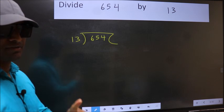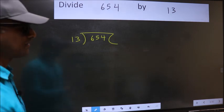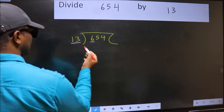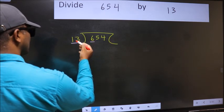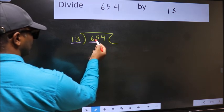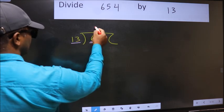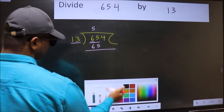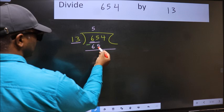This is your step 1. Here we have 6 and here 13. 6 is smaller than 13, so we should take two numbers: 65. When do we get 65 in 13 table? 13 fives are 65. Now we should subtract: 65 minus 65 equals 0.